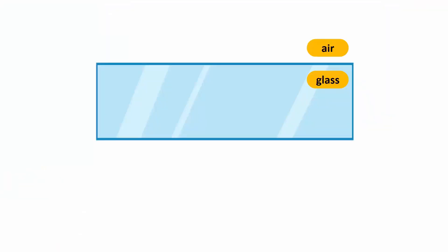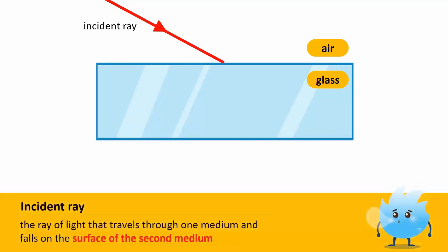Let's learn some important terms related to the refraction of light. A ray of light that travels from one medium and falls on the surface of a second medium is known as an incident ray.